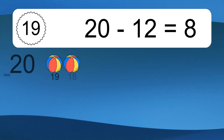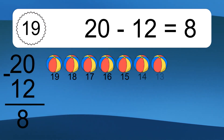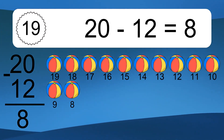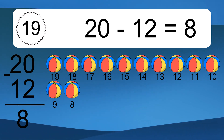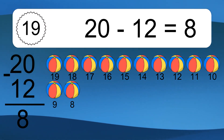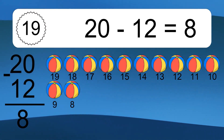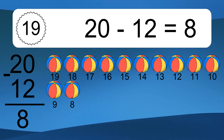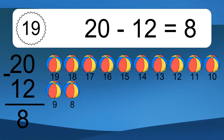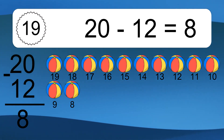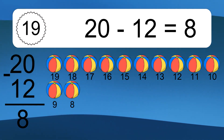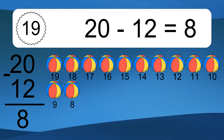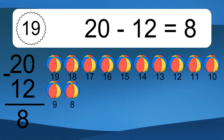20 minus 12 equals 8. Let's count it. 19, 18, 17, 16, 15, 14, 13, 12, 11, 10, 9, 8.